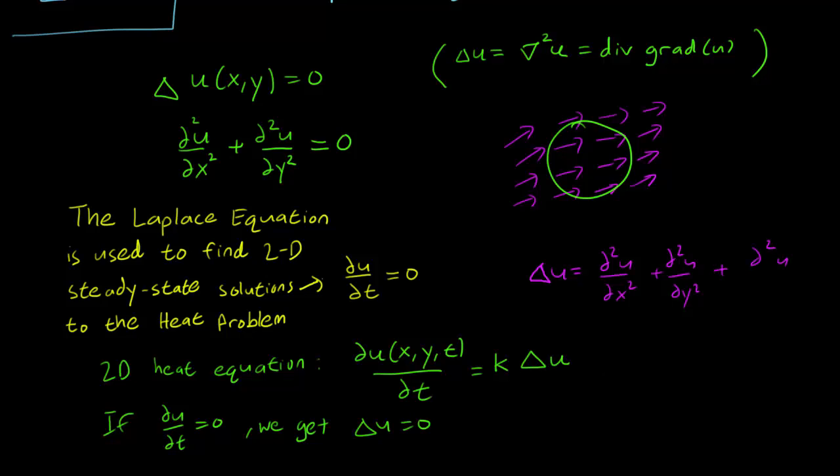There is no need for the partial t squared term. We never include this. It's normally understood that when you are taking the Laplacian, you're just considering the space variables and never the time variable.